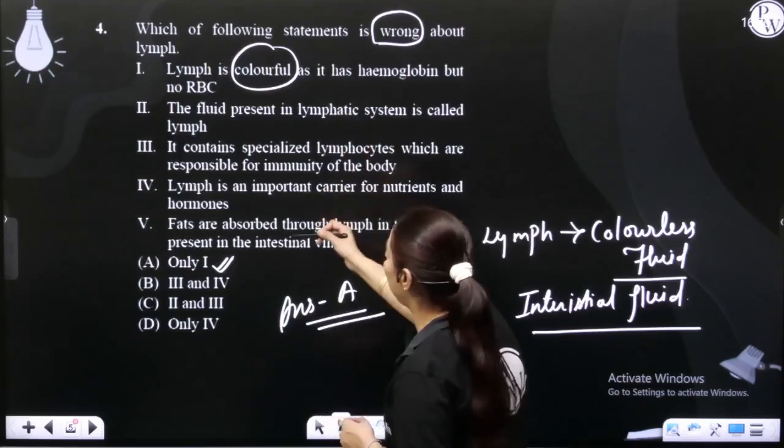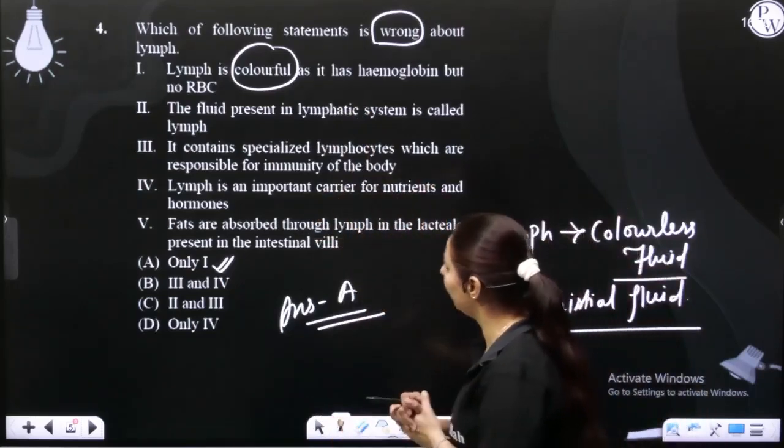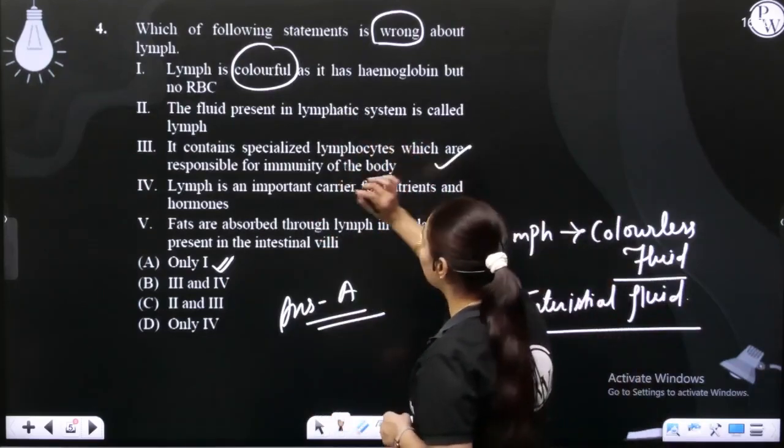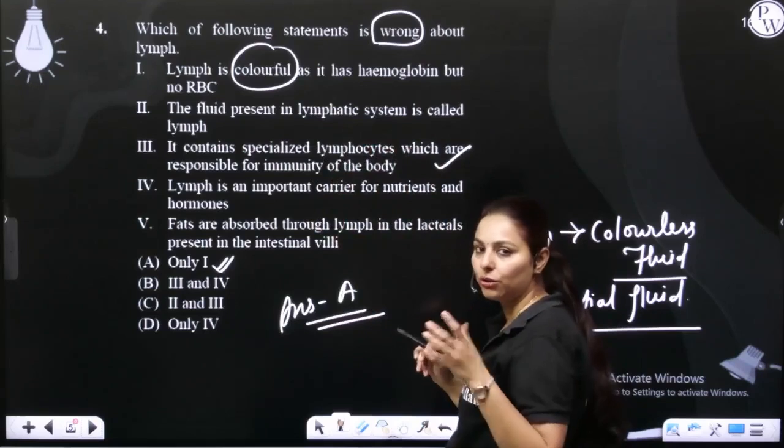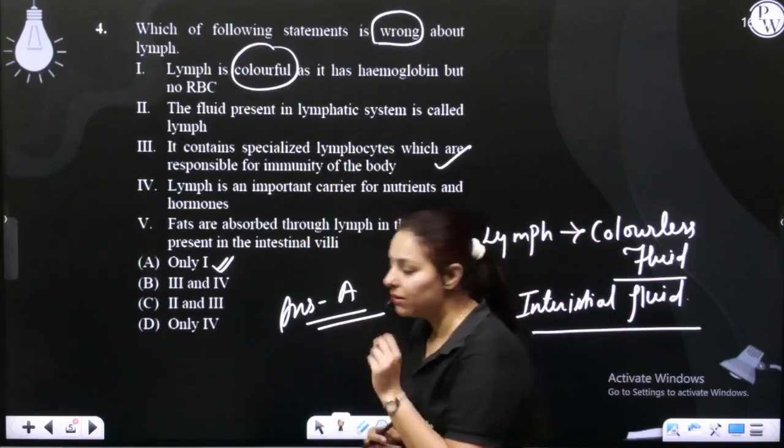Let's verify: lymph contains lymphocytes which are responsible for immunity, that's right. The fluid present in lymphatic system is called lymph, that's right. Lymph is an important carrier for nutrients and hormones, that's also right.